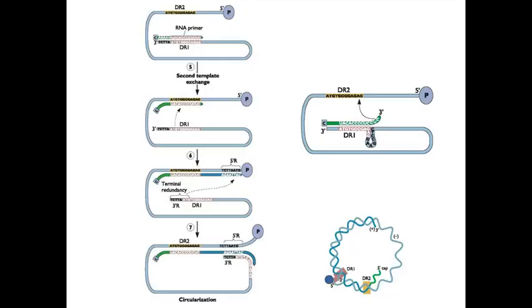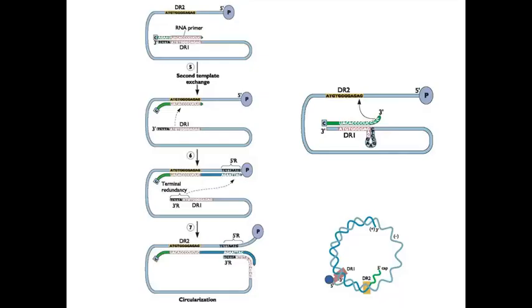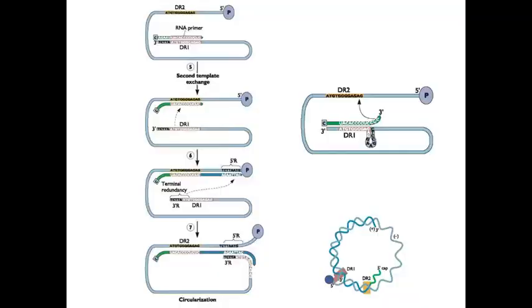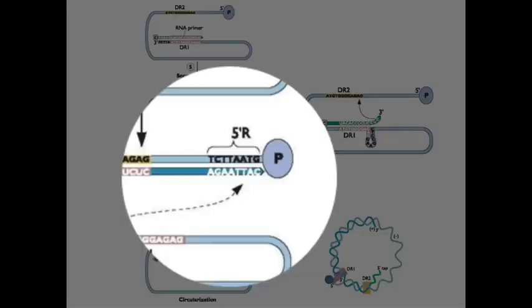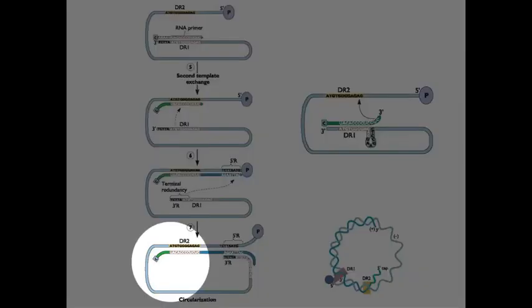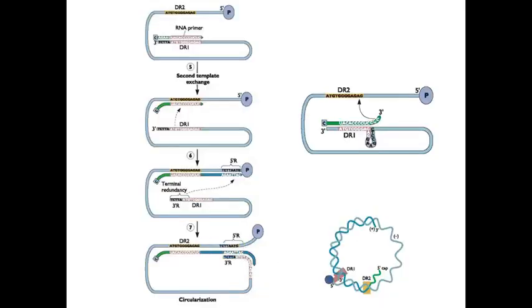That brings us here, and then there's a primer on the other strand, which was this piece of RNA that never left. This will jump strands from DR1 to DR2 and begin copying to the P protein, to the reverse transcriptase, and then it goes beyond that. It gets to this point, which you can see is a single negative strand with a partial positive strand DNA copy.